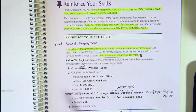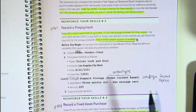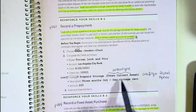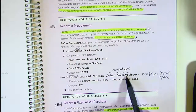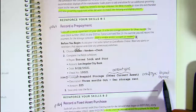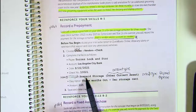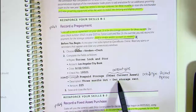When it comes to creating the account, the account type is going to be Other Current Asset, the detail type is going to be Prepaid Expense, and the account name is going to be Prepaid Storage. That's going to cover three months of rental storage.